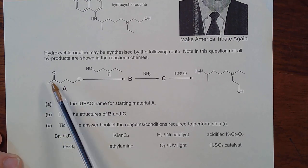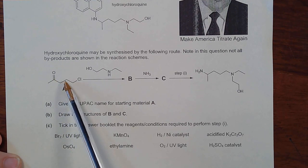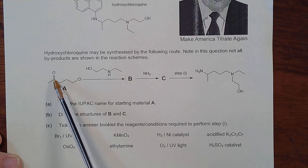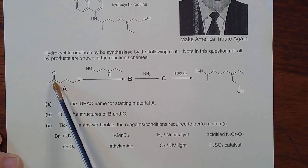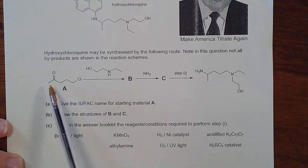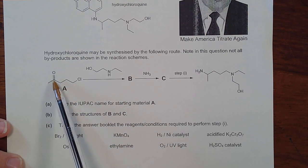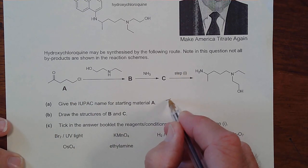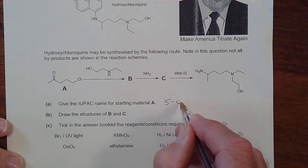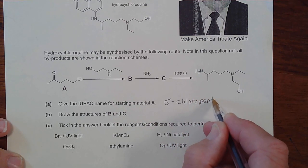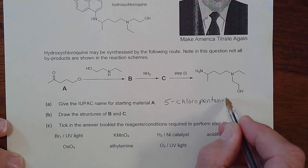From a skeletal point of view the molecule has one, two, three, four, five carbons, so it's a 'pent'. The significant functional group for naming is a ketone on carbon number two, making it pentan-2-one. The chloro group is on carbon number five, so the answer for one mark is 5-chloropentan-2-one.